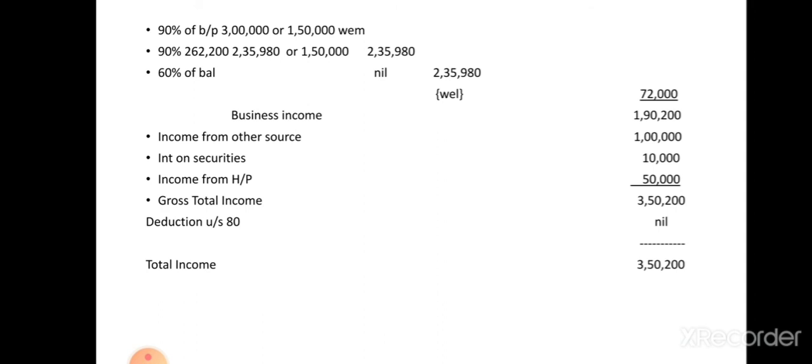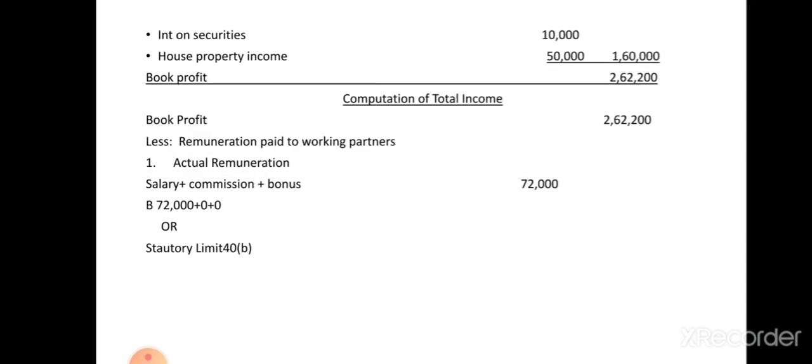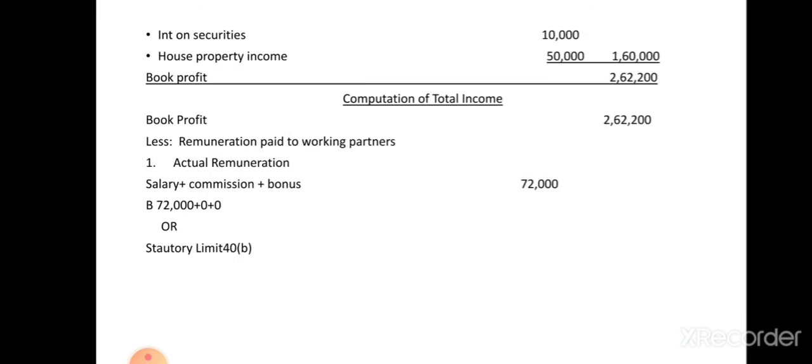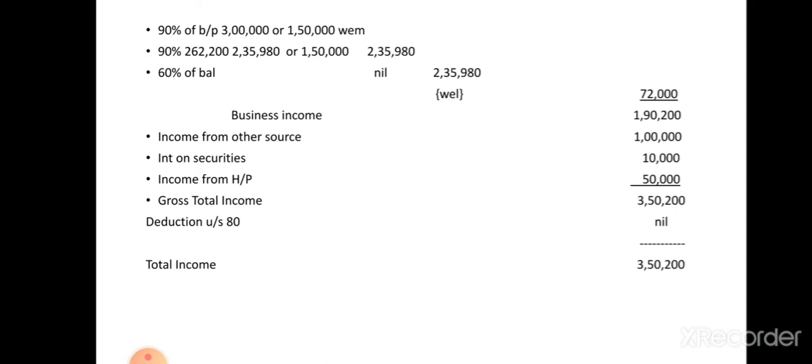To find total income, add all other sources of income from the credit side of the profit and loss account. Income from other sources: one lakh; interest on securities: ten thousand; house property income: fifty thousand. Adding these to the business income of one lakh ninety thousand two hundred gives a gross total income of three lakh fifty thousand two hundred.